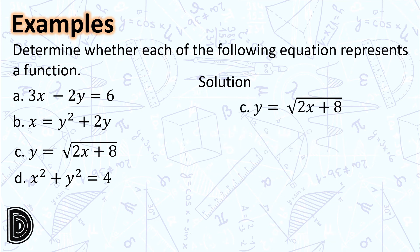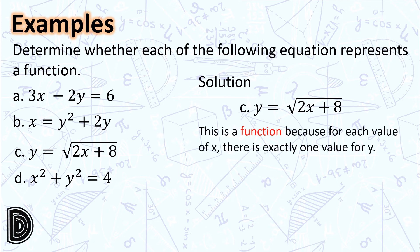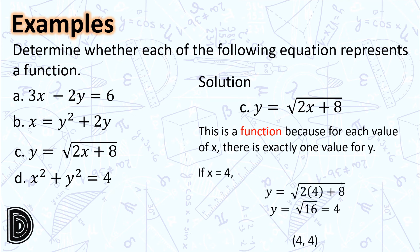Letter c: y = √(2x + 8). This is a function because for each value of x, there is exactly one value for y. For example, if x = 4, we have y = √(2×4 + 8) = √(8 + 8) = √16 = 4. Hence, we have the ordered pair (4, 4).